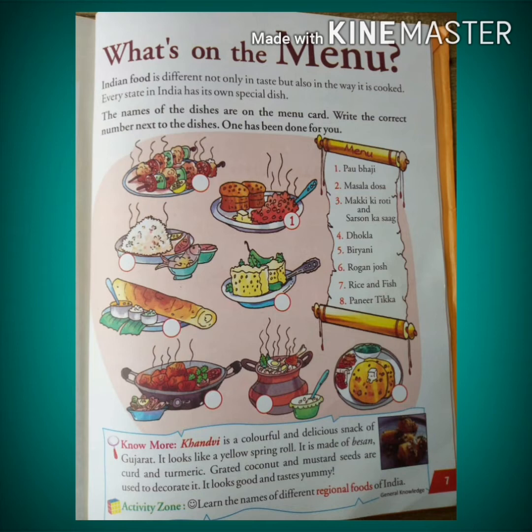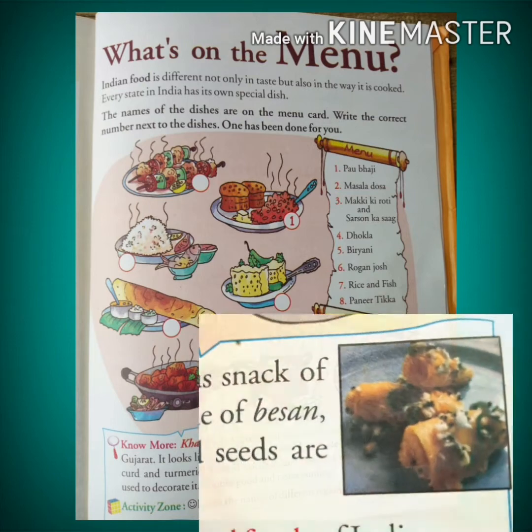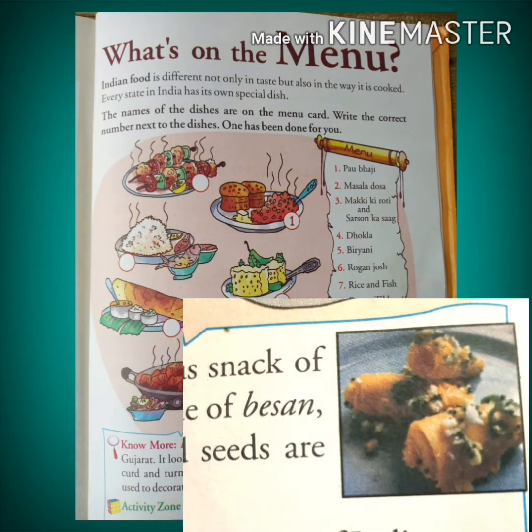Every state in India has its own special dish. One such dish is khandvi of Gujarat. Khandvi is a colorful and delicious snack of Gujarat. It looks like a yellow spring roll.